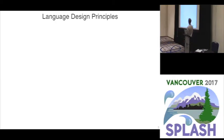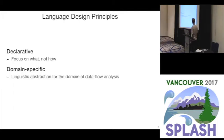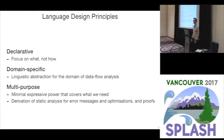So for FlowSpec we had a number of language design principles. First we want a declarative language that focuses on what and not how. No more operational specification. Secondly, we're going for a domain-specific language where we can use linguistic abstraction for the domain of data flow analysis. And third, we want it to be a multipurpose specification language where you can get multiple things out of the specification. To do that we want to minimize the expressive power to just what we need